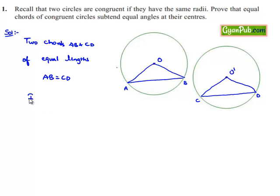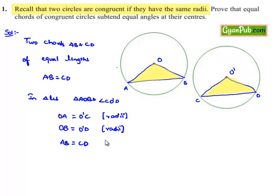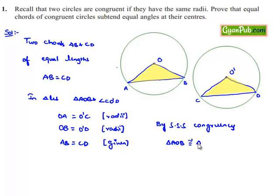In order to prove this, let us consider both triangles, that is triangle AOB and triangle CO'D. OA is equal to O'C since the figures are congruent, their radii will be equal. OB is equal to O'D since the figures are congruent, their radii will be equal. And also, it is initially given that the chords are of equal length, therefore AB is equal to CD. Now by the SSS property of congruency, we can say both triangles are congruent, that is triangle AOB is congruent to triangle CO'D.